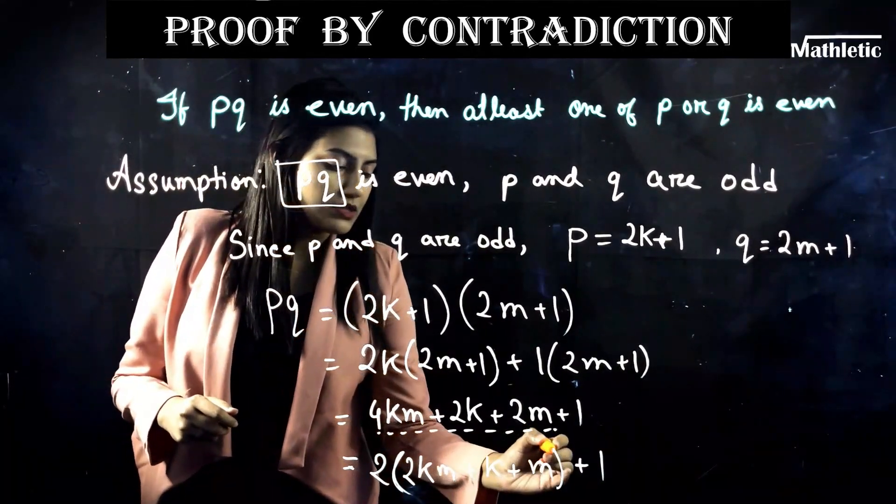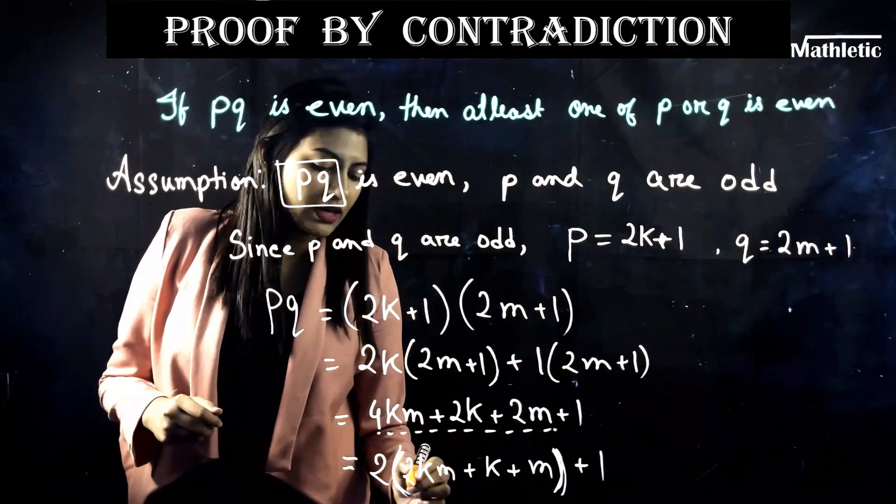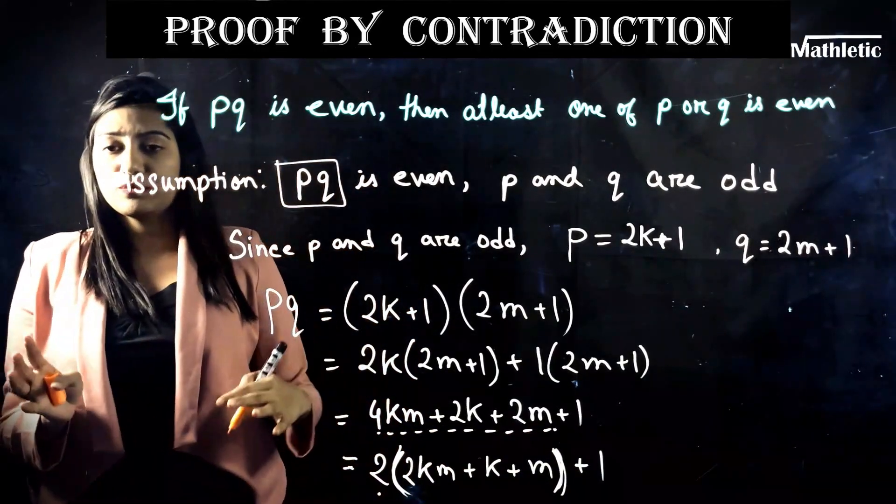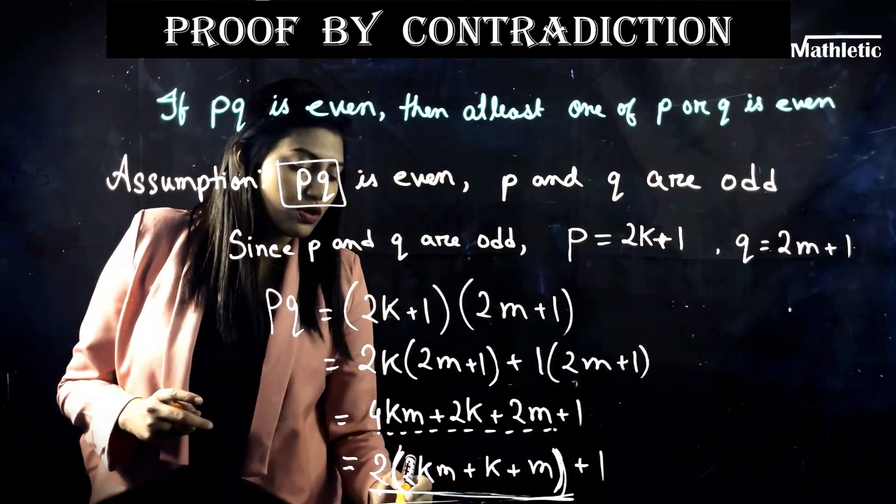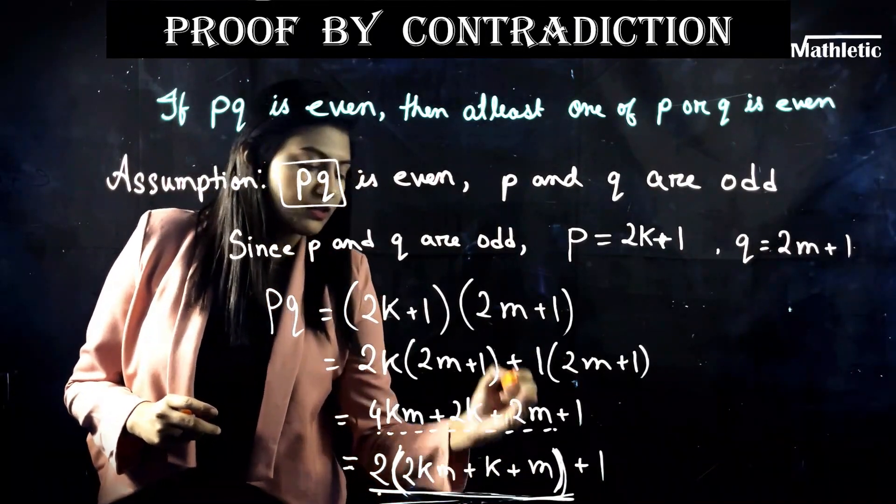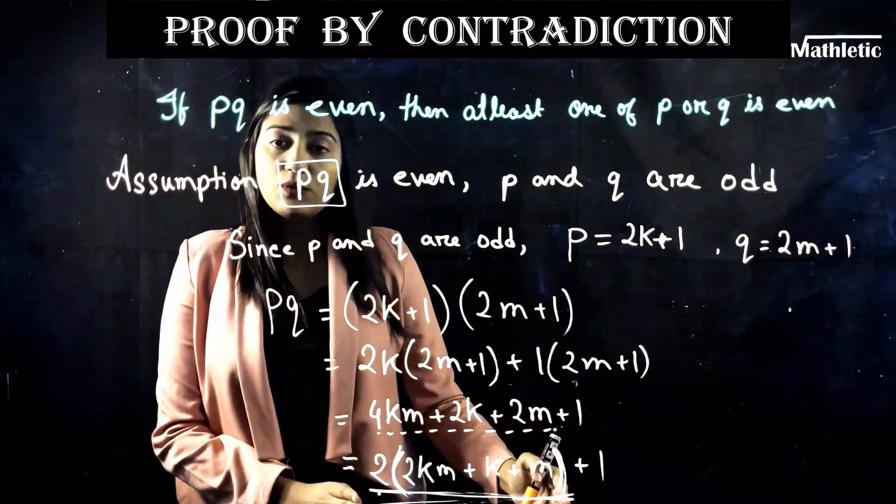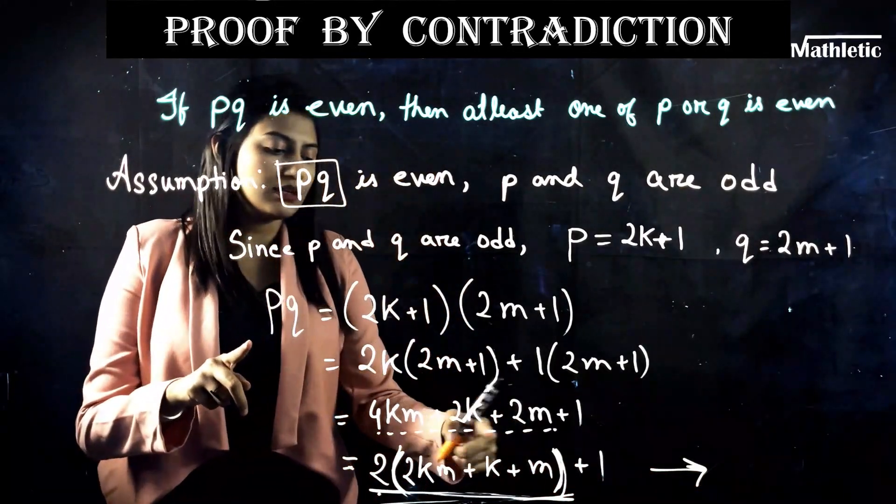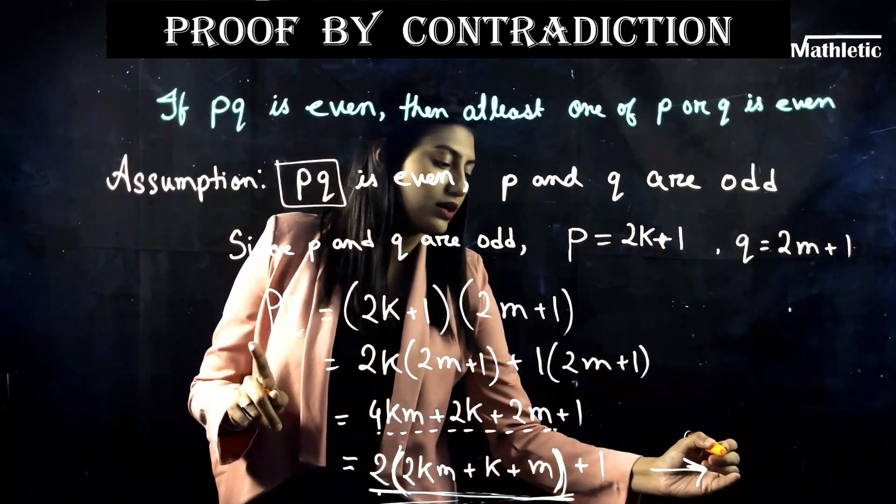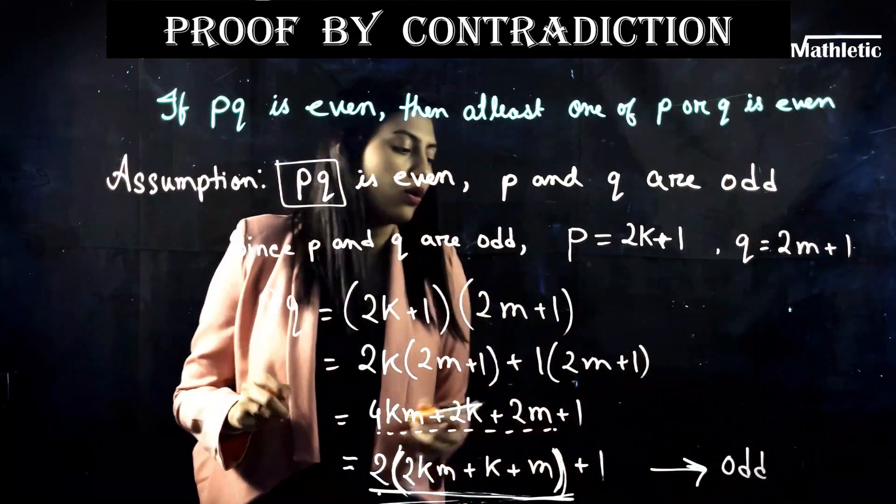So since this term inside the bracket is an integer and you have a 2 outside the bracket, this entire thing has to be a multiple of 2 which makes it an even value. And you are adding 1 with an even value. So this exact pq thing is actually even plus 1 makes it odd.